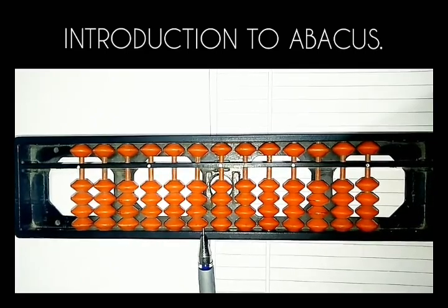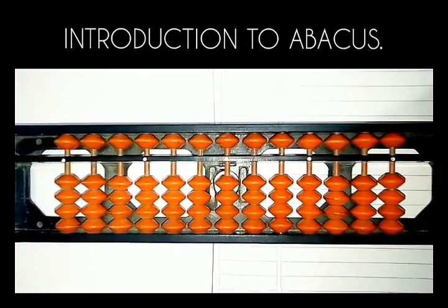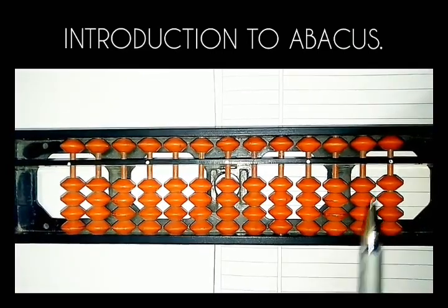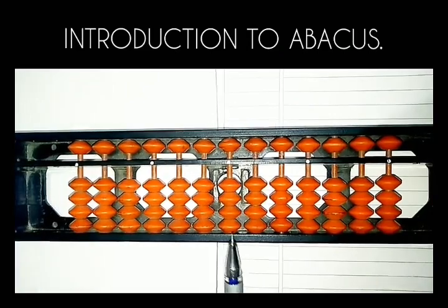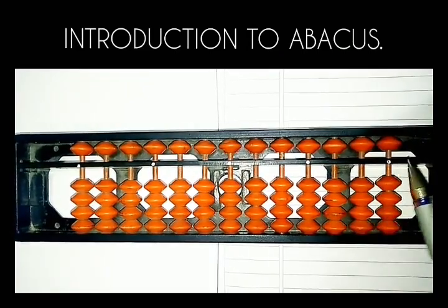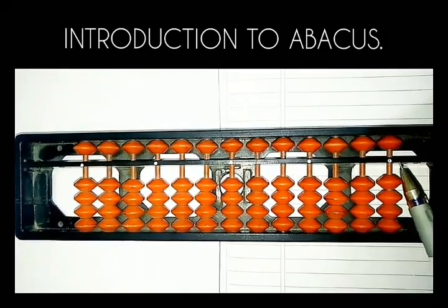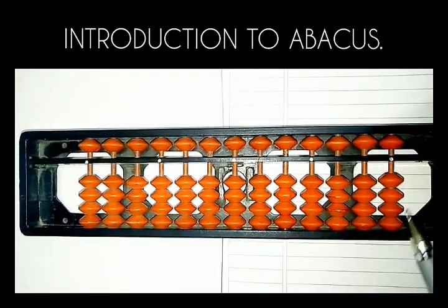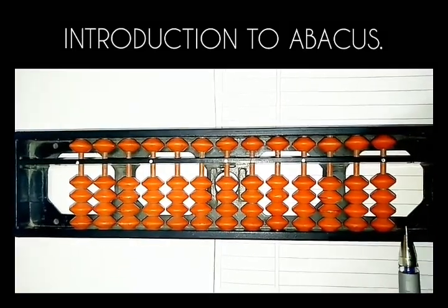Now I will explain about the rods. You can see there are some white dots on the unit bar. This dot is known as unit dot. Now where there is a unit dot, that rod is known as unit rod. Which rod?